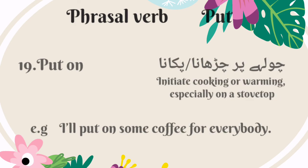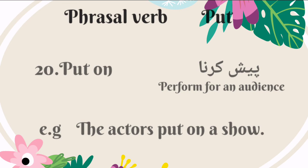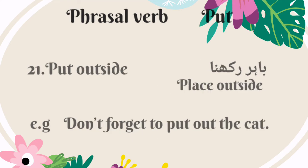'Put on' also means to initiate cooking or warming, especially on a stovetop — Urdu mein is ka matlab hai chulhe par chadhana ya pakana. For example: I'll put on some coffee for everybody. 'Put on' also means to perform for an audience — Urdu mein is ka matlab hai pehsh karna. For example: the actors put on a show. The twenty-first phrasal verb of put is 'put outside.' It means to place outside — Urdu mein is ka matlab hai bahir rakhana. For example: don't forget to put out the cat.